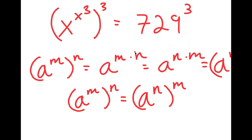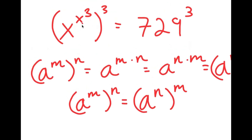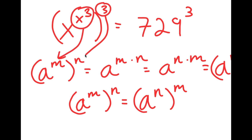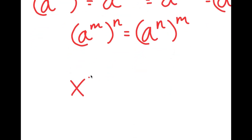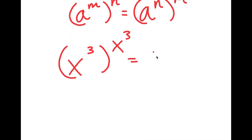So now from here, I have x to the power of x to the power of 3, to the power of 3. I can think of x to the power of 3 as m and 3 as n. So if I switch the places of these two, I get x to the power of 3 to the power of x to the power of 3. And remember, this is equal to 729 to the power of 3.